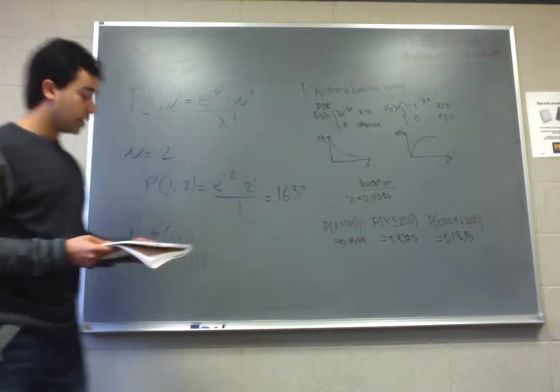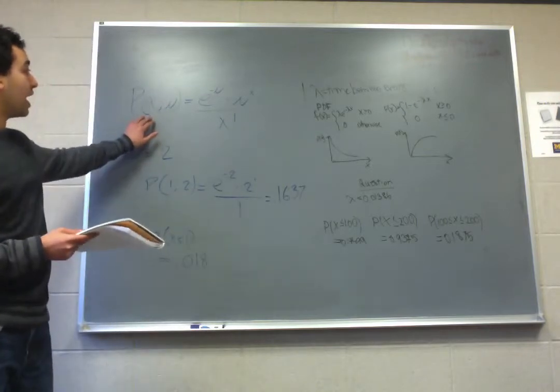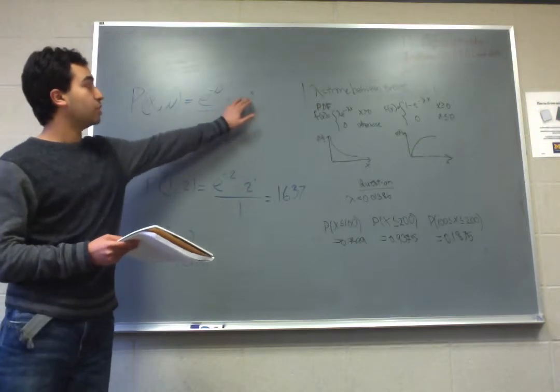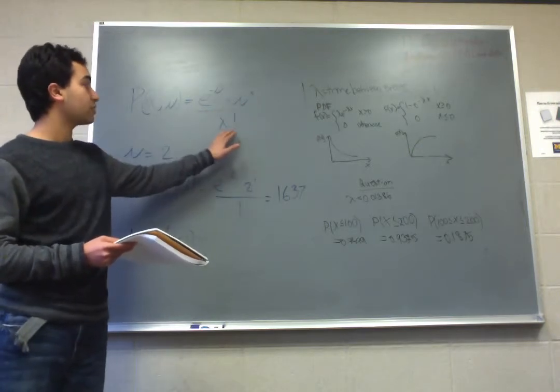The formula is: p given x and mu equals e raised to negative mu times mu raised to x over x factorial.